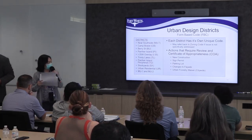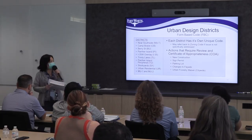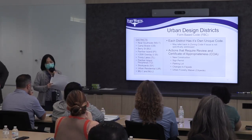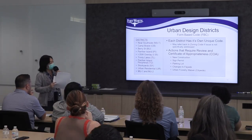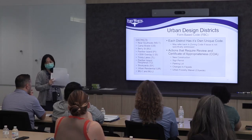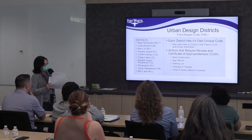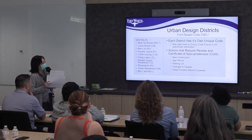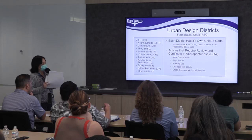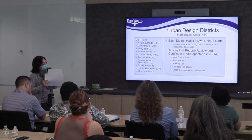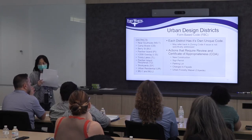We are looking at the district that Steve just introduced. On the left side, that's a form-based code — these are the districts that use form-based code. On the right-hand side, you will see that each district has its own unique code, so you have to apply for the district and look for what COA you need to apply for.